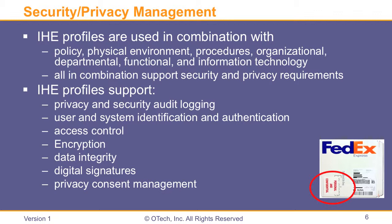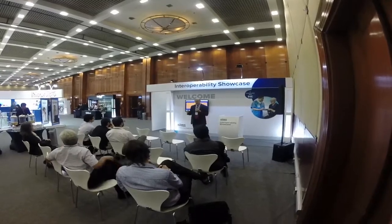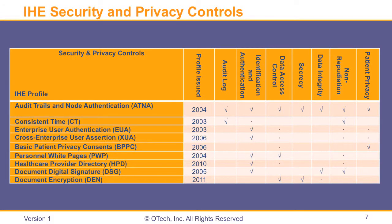We have user and system identification and authentication — we want to make sure that people are properly identified and authenticated using user login, passwords, or other means to provide access control. Data integrity and encryption deal with information being exchanged securely so that others cannot intercept it. Then we have digital signatures and privacy consent management, so that if somebody signs a consent form at one location, the other locations know about it and know exactly what can and cannot be accessed. This slide gives an overview of the different security and privacy controls, showing the profiles, when they were issued, and what each provides — for example, audit logs provided in ATNA and consistent time.